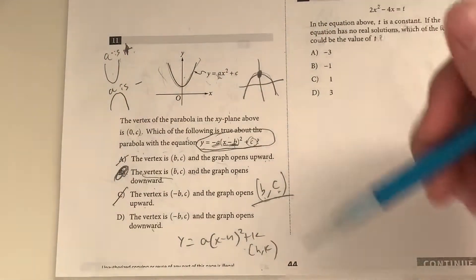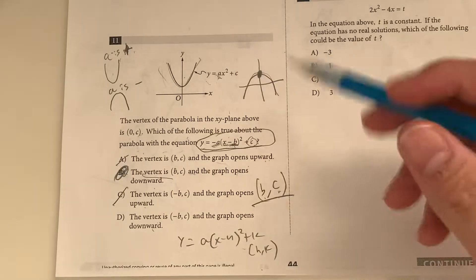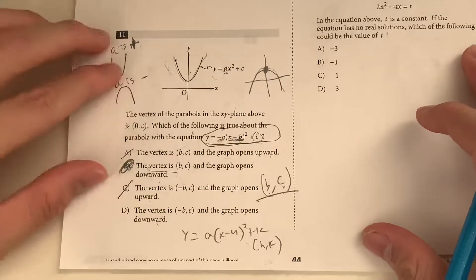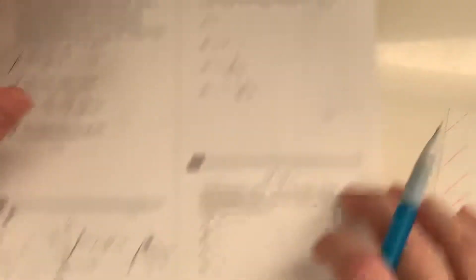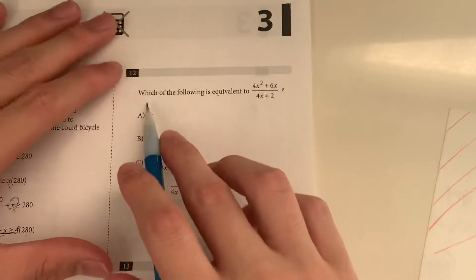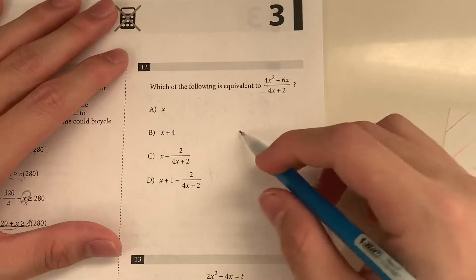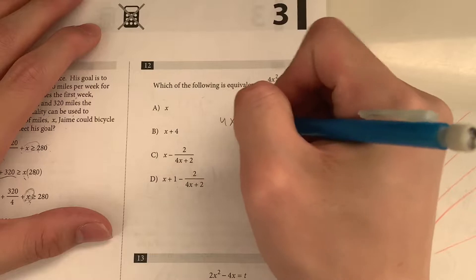So this is basically everything to do with vertexes and interpreting graphs. So watch this again if you have troubles with A, B, and all that stuff. Question 12. Which of the following is equivalent to 4x squared plus 6x over 4x plus 2. So this question is asking us to divide, basically. So we divide them.